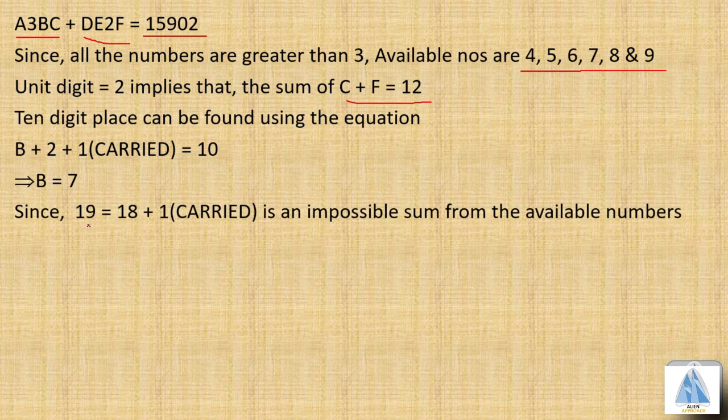Now, since the hundreds digit is 9, therefore 9 must be a single digit number, because 19 is an impossible sum from the available numbers. 19, which equals 18 plus 1 carried from the previous 10, is an impossible sum.